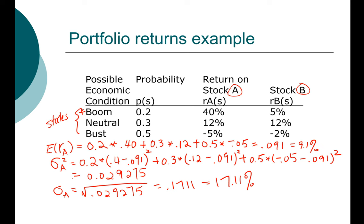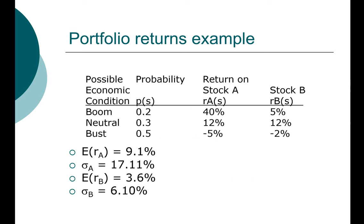Pause the video now and go ahead and compute the expected return and standard deviation for Stock B on your own. Did you get 3.6% for expected return and 6.1% for standard deviation for Stock B? Congratulations. So now we see how this is a review of things that we have done before.